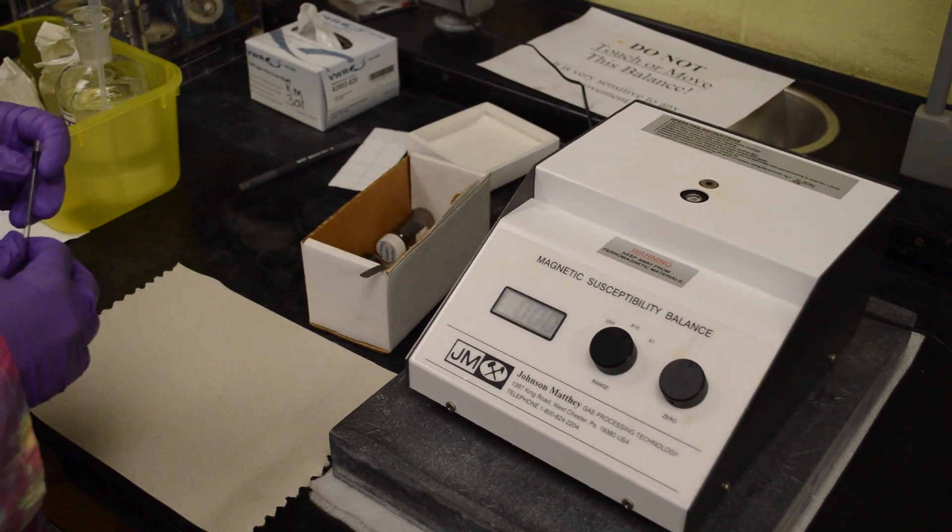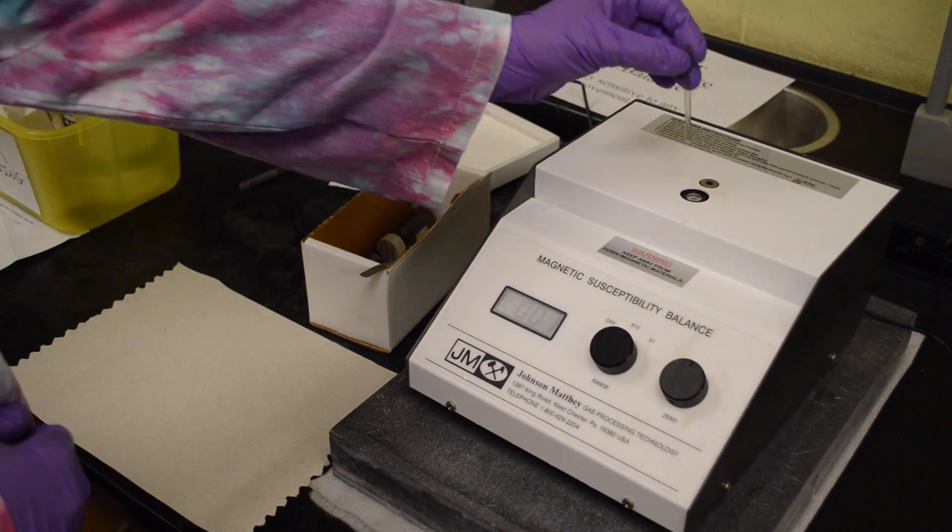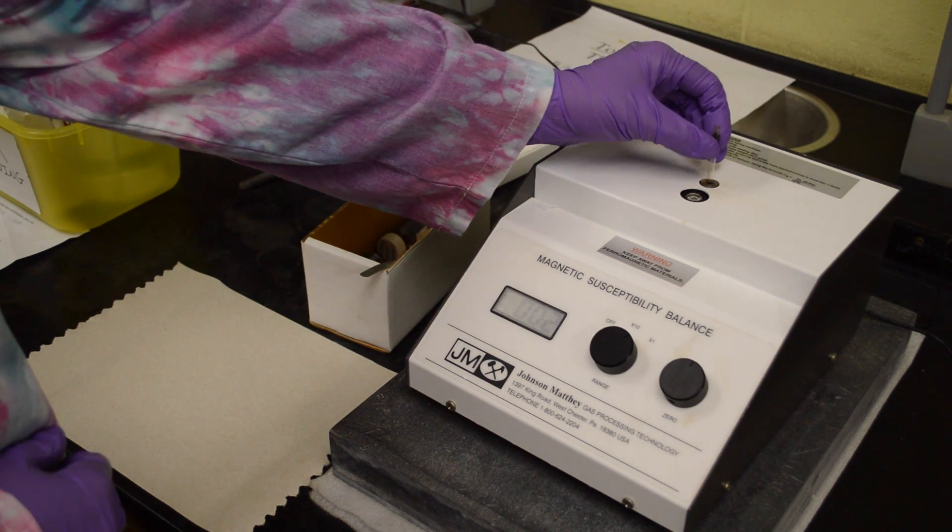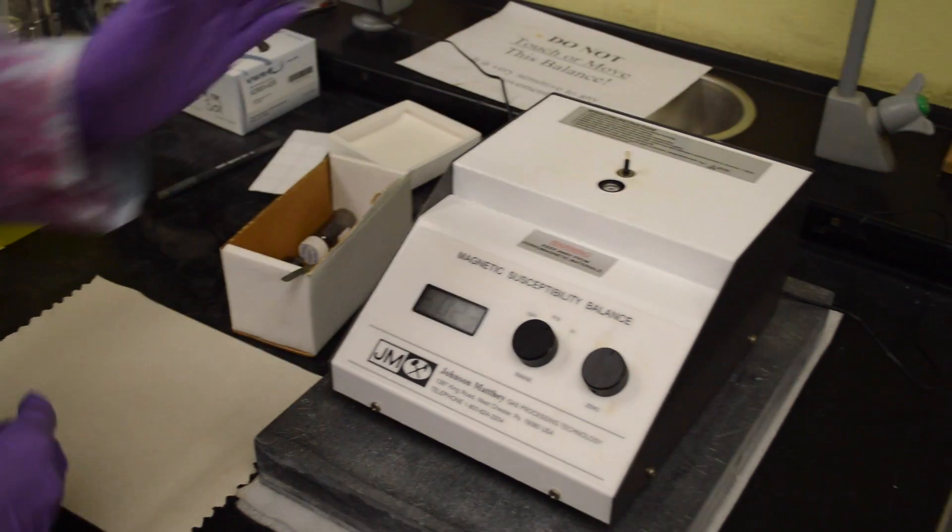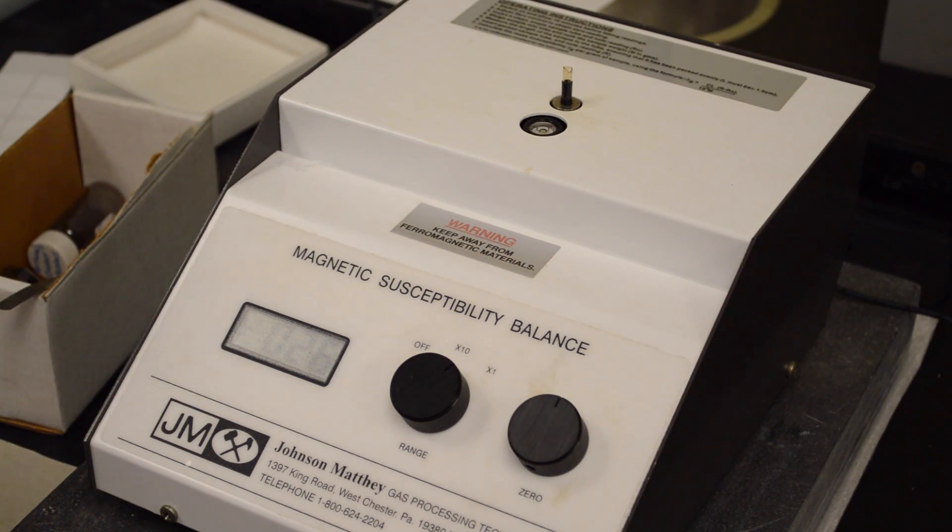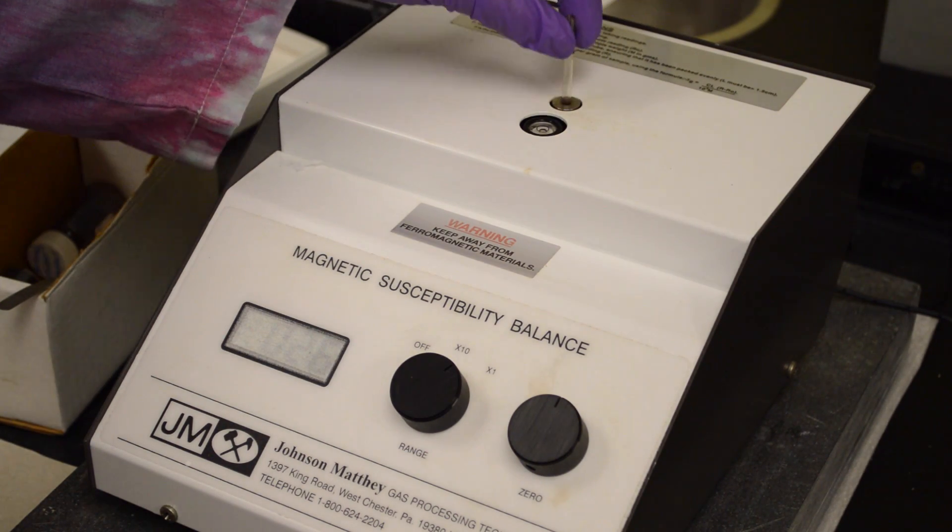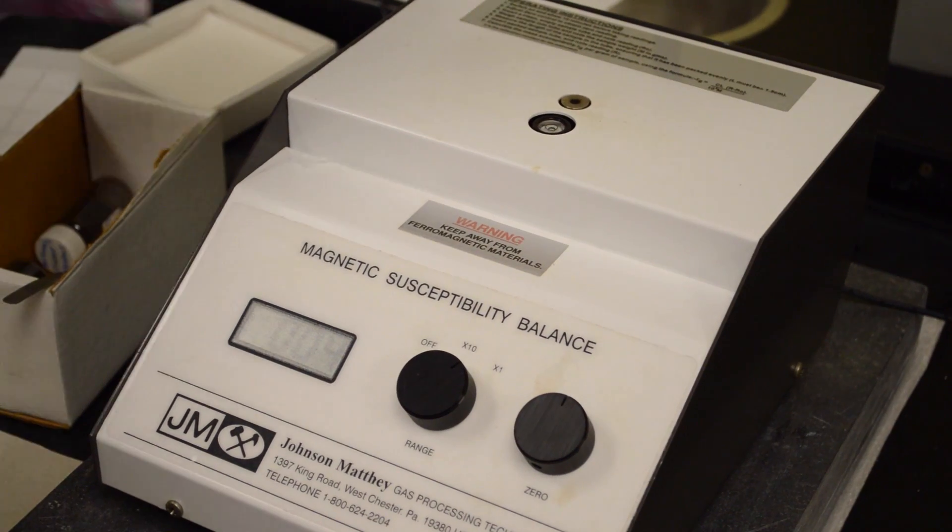Place the empty tube in the tube guide and record the reading, which would be R0. Then remove the empty tube and weigh it carefully on a balance to the nearest milligram and record the mass of the empty tube in grams.